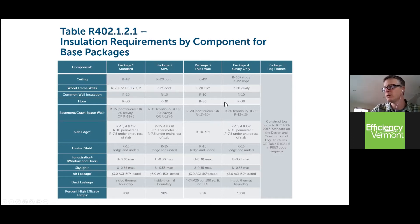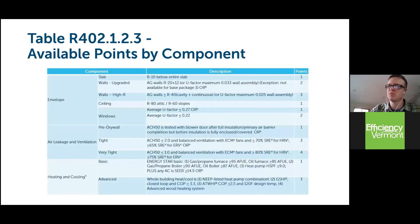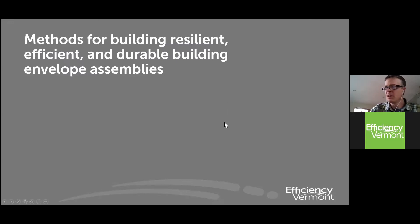You have to pick the package and comply with it fully — you can't mix values from different packages. With the new 2020 code, based on the square footage of the house, you need to attain a set number of points. Points can be gained by enhancing building performance: increasing building envelope performance, getting the envelope tighter via air leakage rates, better balanced ventilation, more efficient heating and cooling equipment, water use, renewable energy, EV ready, and battery backup. You meet the base requirements in the package and then choose how many points you need based on square footage.